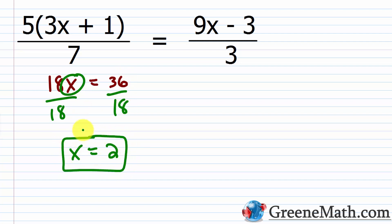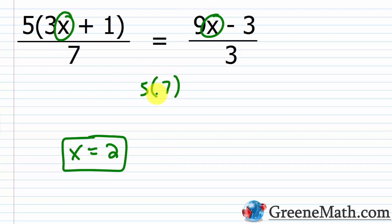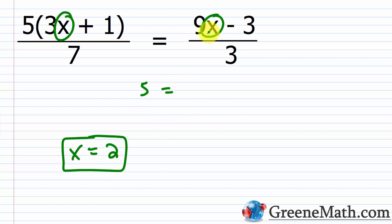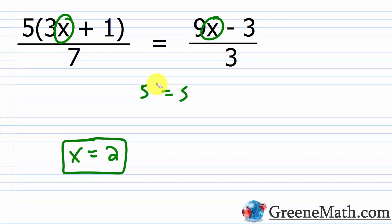Let's verify by plugging in 2 for x. On the left: 5 times (3×2 + 1) = 5 times 7 over 7 = 5. On the right: (9×2 - 3)/3 = 15/3 = 5. We get 5 = 5, so x = 2 is the correct solution.